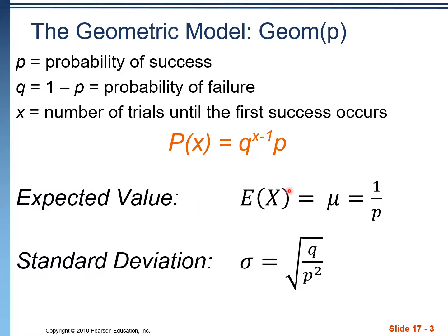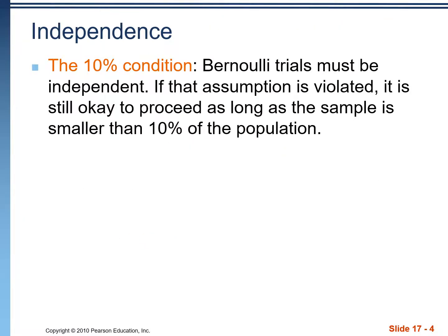The expected value for a geometric probability model is 1 over P, and the standard deviation is the radical of Q over P squared. There's also the 10% condition: Bernoulli trials must be independent, but we can ignore that as long as our sample is smaller than 10% of the overall population — so it's okay if they're not independent as long as our sample size is less than 10% of the population.